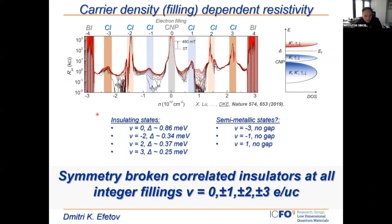When we start in the lower energy gap, we find a robust insulating state. When we completely fill the band structure, we find an energy gap. In the middle, we of course see the charge neutrality point. But there are many other features in the system not defined by this single-particle band structure.